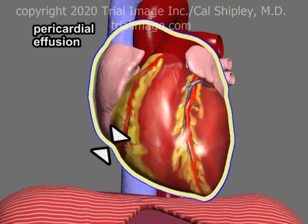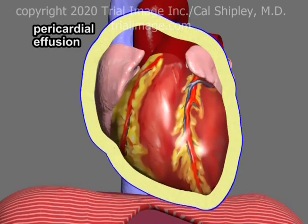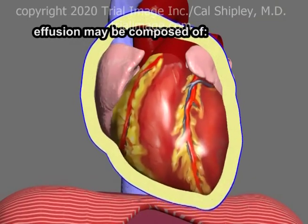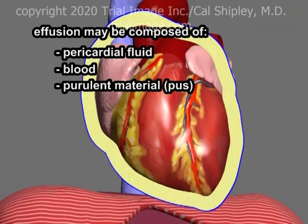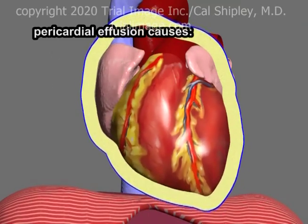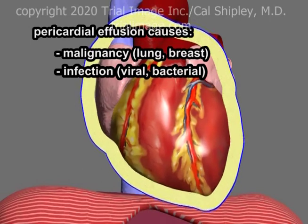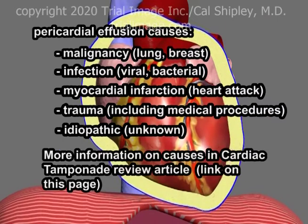A pericardial effusion refers to an abnormal accumulation of fluid within the pericardial space. Depending on the underlying cause, the effusion may consist of pericardial fluid, blood, purulent material commonly known as pus, or a combination of any of the three. There are many possible underlying causes for pericardial effusion. A few of the most common causes are malignancy, especially that of the breast or lung; infection, viral or bacterial; secondary to heart attack; trauma, including injury during medical procedures; and idiopathic, or unknown.